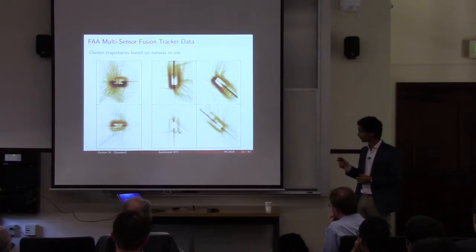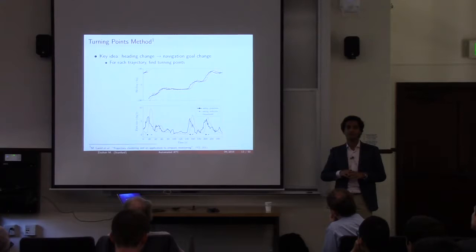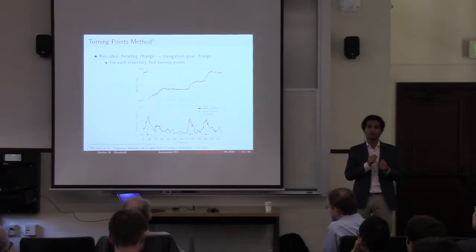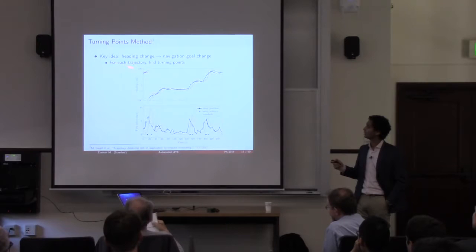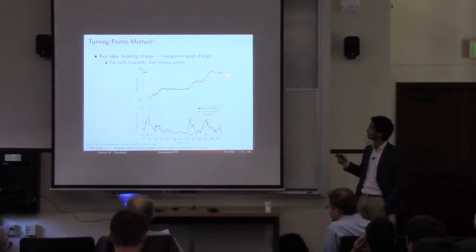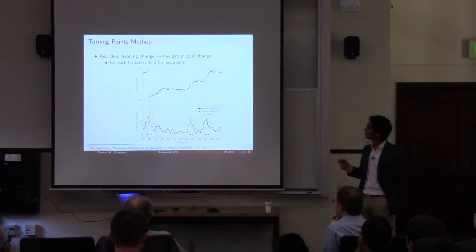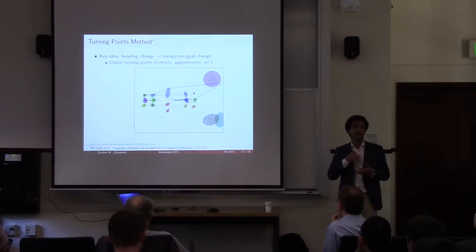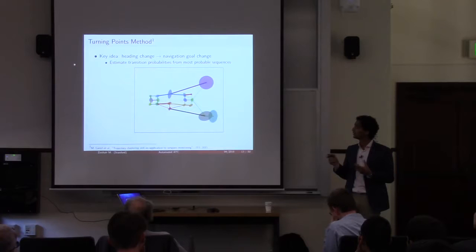The first method to learn this is inspired by the work of Guerriero et al. on trajectory clustering. The idea is that finding turning points in trajectories gives us a measure of when the pilot has changed their navigation goals. For example, an aircraft departing south turns into a crosswind, then downwind, base, and back to final. Taking the derivative of the heading signal, we find those turning points, cluster them, and turn each trajectory into a sequence of clusters. Given that sequence, we compute probabilities of going from one turning point to another, yielding networks that describe navigation goal transition probabilities.